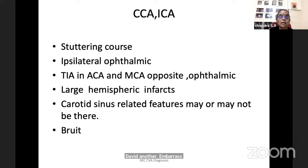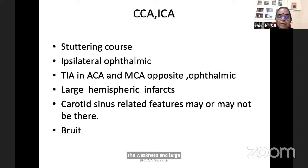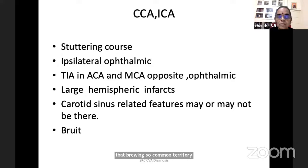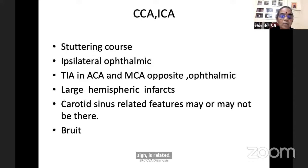In common carotid artery disease, you get ipsilateral ophthalmic artery TIA and contralateral ACA, MCA TIAs — stuttering type of weakness, large hemispheric infarcts. Carotid sinus-related features, newly appearing tachycardia, fluctuating blood pressure, and a bruit may be present. Common carotid artery is suspected when the person has step-like progression, stuttering hemiplegia, ipsilateral ophthalmic and contralateral MCA/ACA involvement, carotid occlusion, large hemispheric infarcts, and carotid sinus-related symptoms like autonomic fluctuations and audible or palpable bruit.